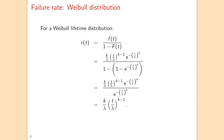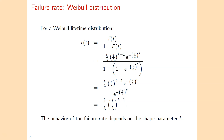The behavior of this failure rate depends on the value of k. If k is greater than 1, then this power is positive and we have an increasing failure rate. If k is smaller than 1, that power is negative and we have a decreasing failure rate. And if k is exactly equal to 1, then we have a constant failure rate.